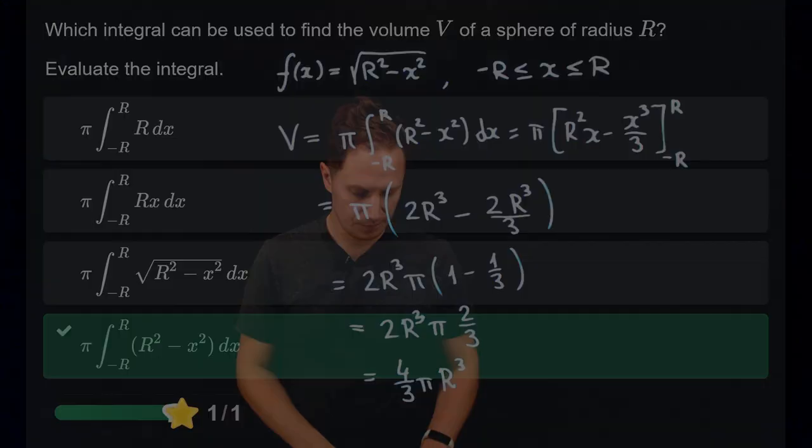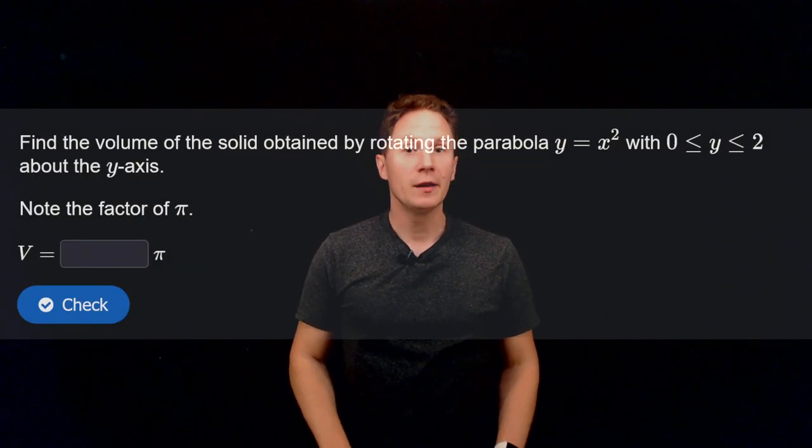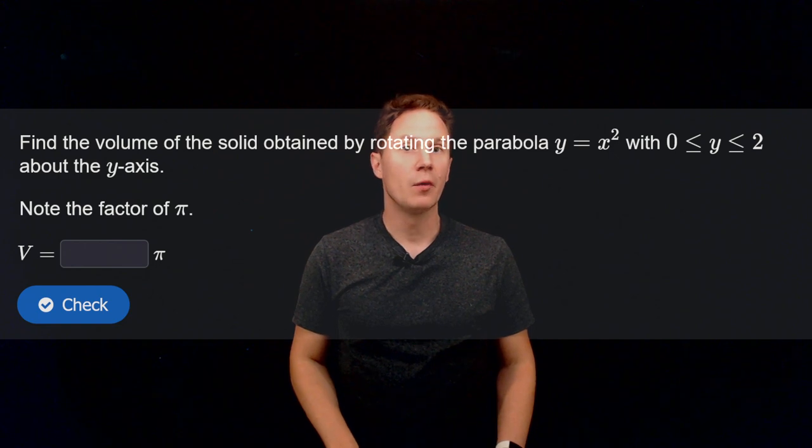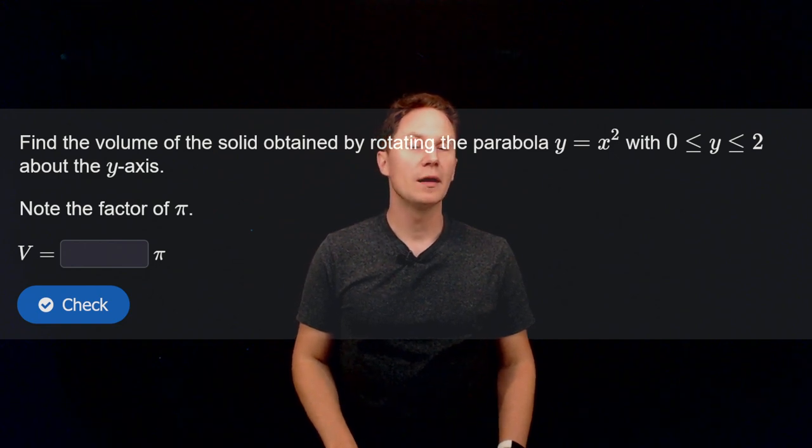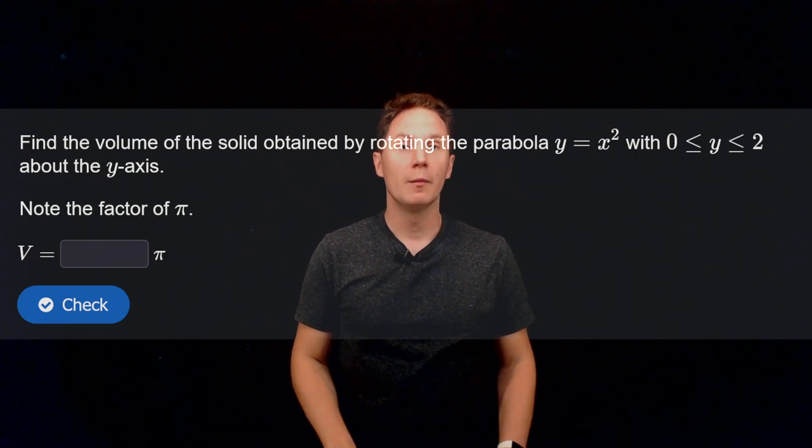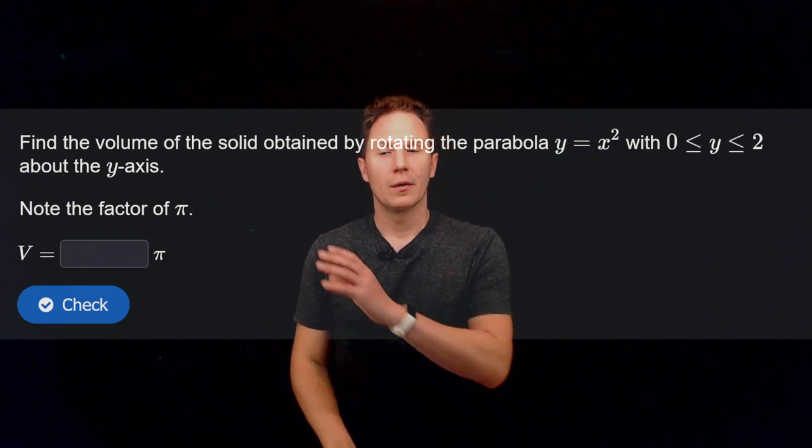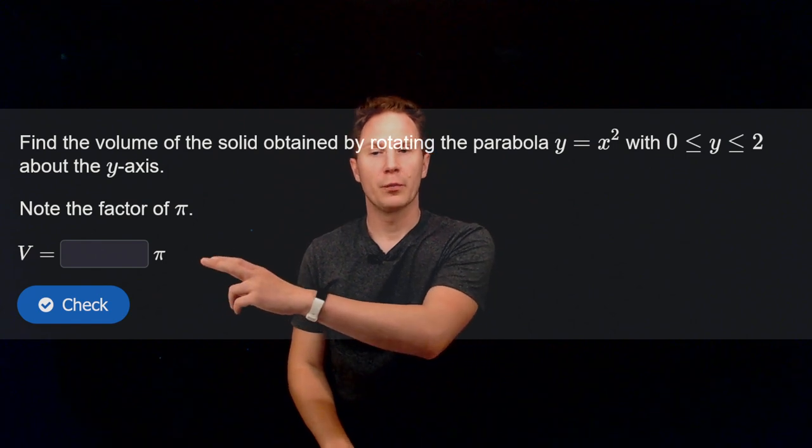Let's look at the next question. Find the volume of the solid obtained by rotating the parabola y equals x squared with y varying from 0 to 2 about the y-axis. So pause the video, compute this volume.